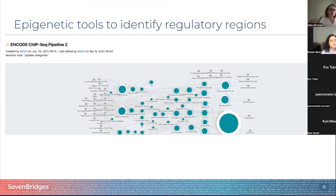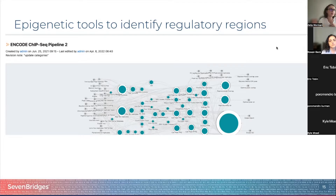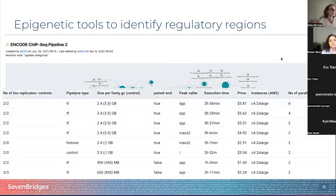ChIP-seq basically looks at patterns of transcription factors and other proteins that bind to the DNA, combining chromatin immunoprecipitation with standard next-generation sequencing. Even though this is a very complex workflow, we also benchmarked this to make sure our researchers could predict how much it would cost to run a couple of samples.